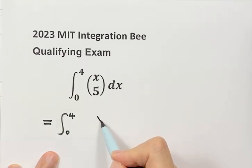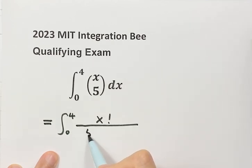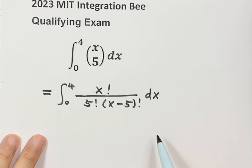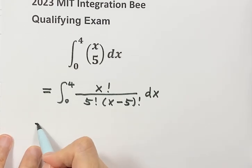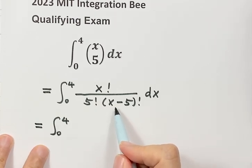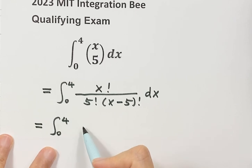On top, that's x factorial. On the bottom, 5 factorial, then x minus 5 factorial. Let's simplify. Here, x factorial. We want to cancel the x minus 5 factorial.